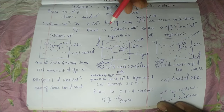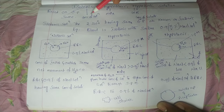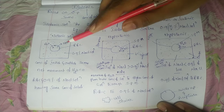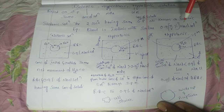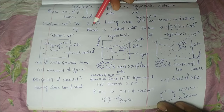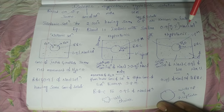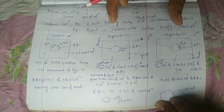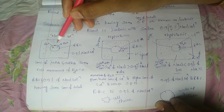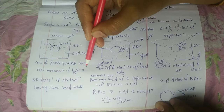Ippudu isotonic gurinchi telisko nnamo. Iso ante same, tonic ante concentration of solution. Example endi ante, blood is isotonic with saline - 0.9 percentage of NaCl solution. Ante same concentration of solute in blood lo, 0.9 percentage of NaCl solution lo solute concentration same count undi. Kaabatti the net movement of water zero avutundi.